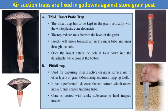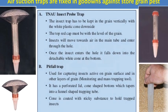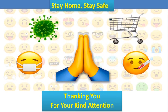The air suction trap is mostly used against stored grain pests in godowns or stored grain areas. The TNAU developed two traps: the probe trap and the pitfall trap, which are mostly designed to attract different stored grain pests in godown areas. This is all about the different insect traps we can use for pest surveillance purposes. Thank you.